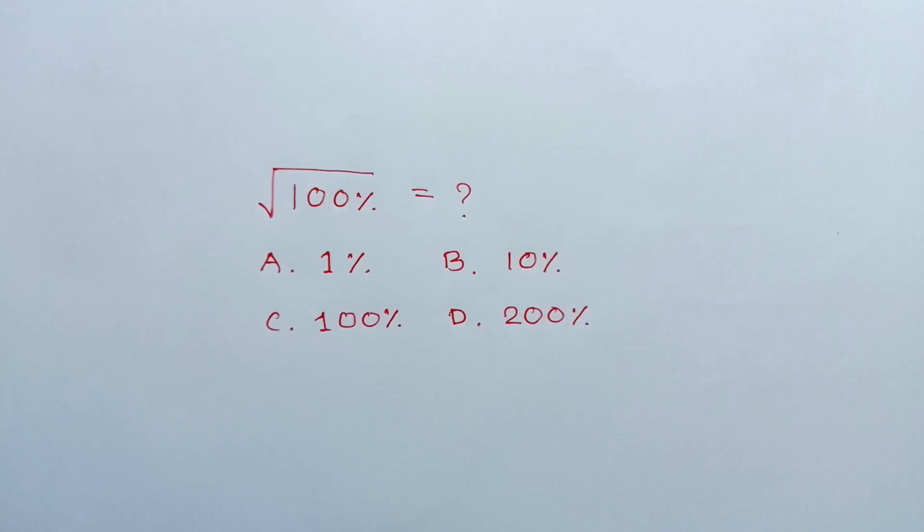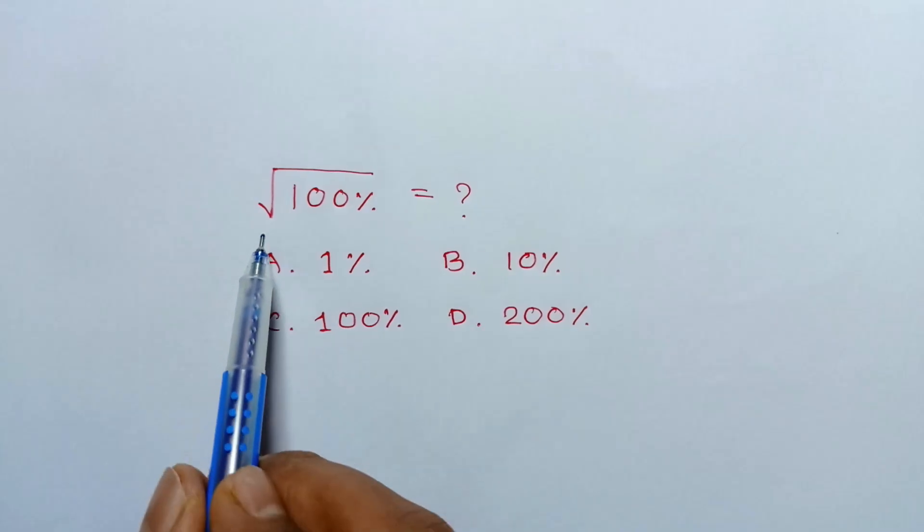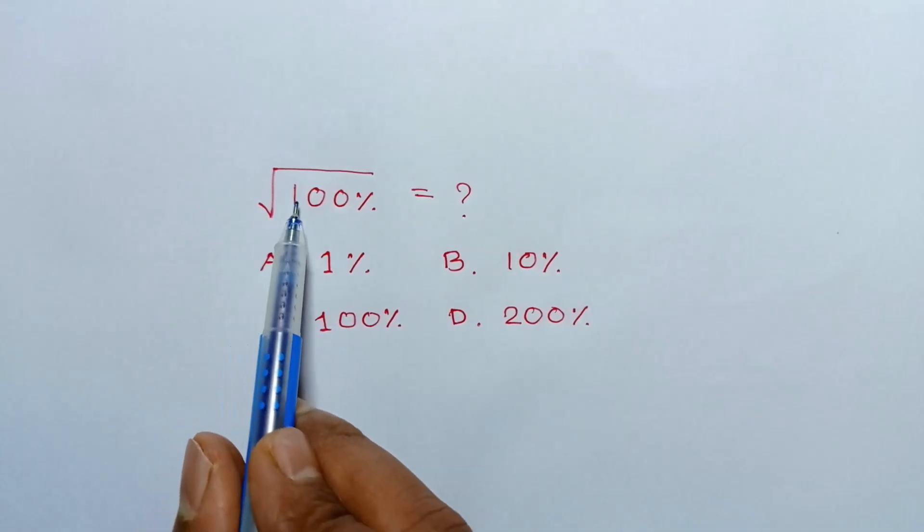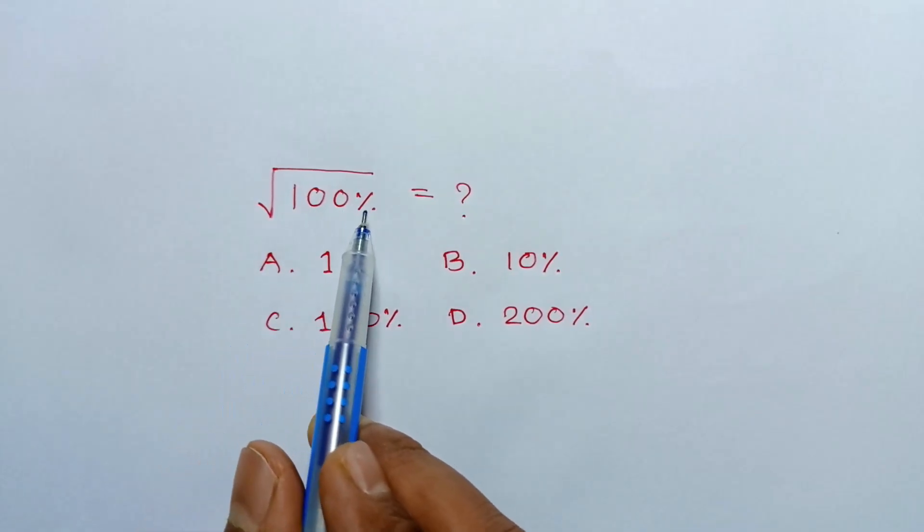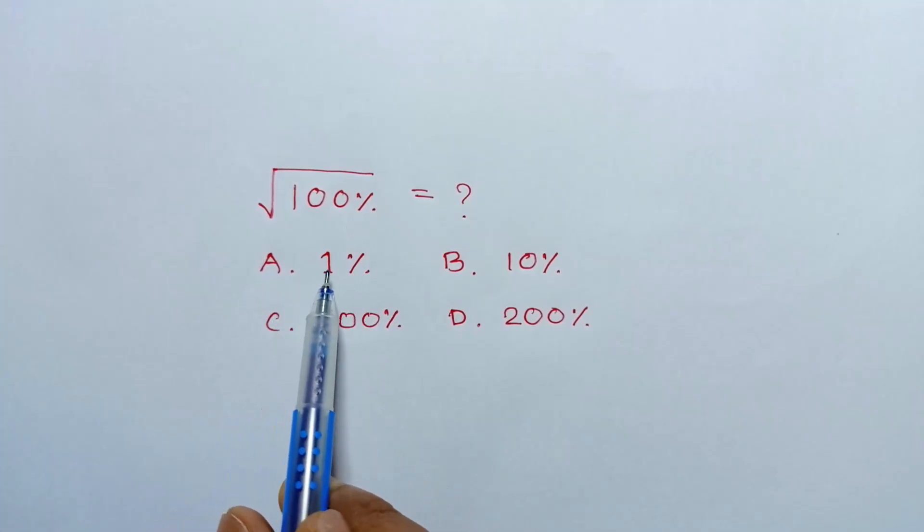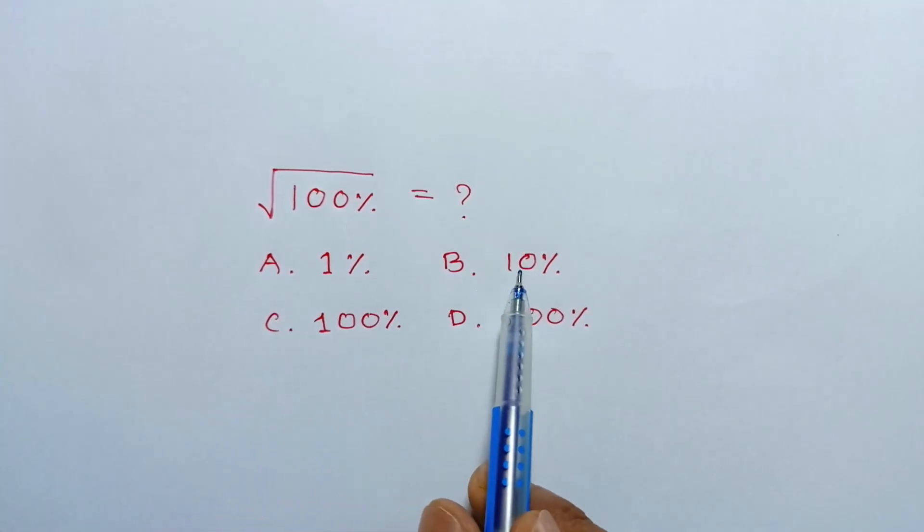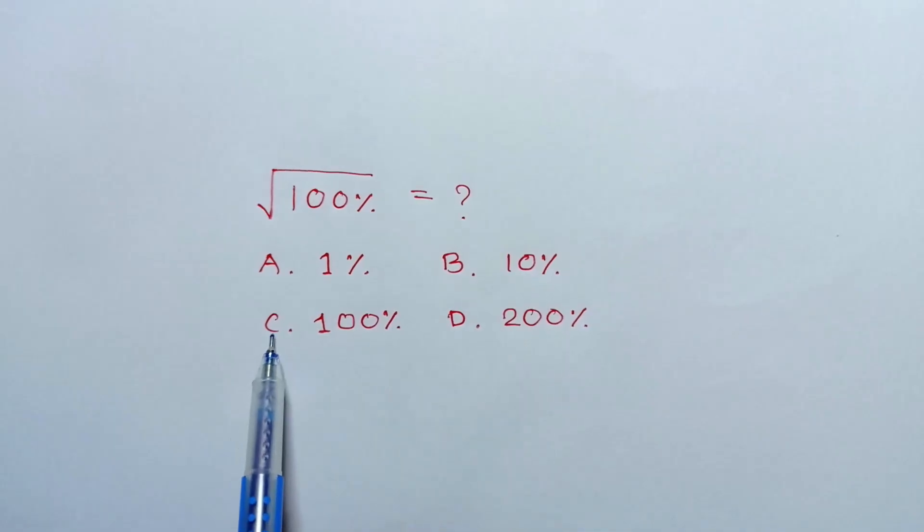Hi everyone, in this video I am going to show how to find which one is correct for the square root of 100 percentage. Option A: 1%, Option B: 10%, Option C: 100%, and Option D: 200%.